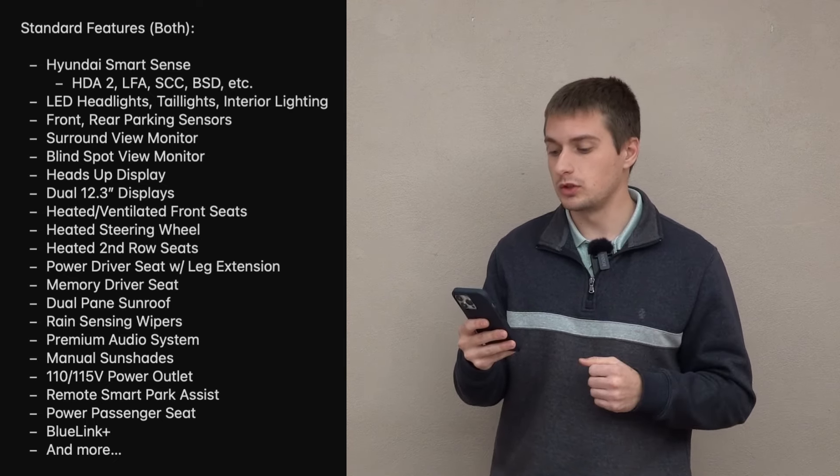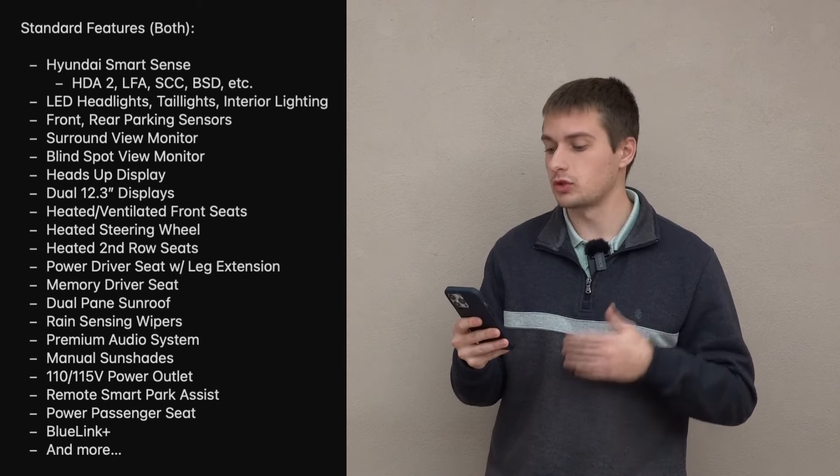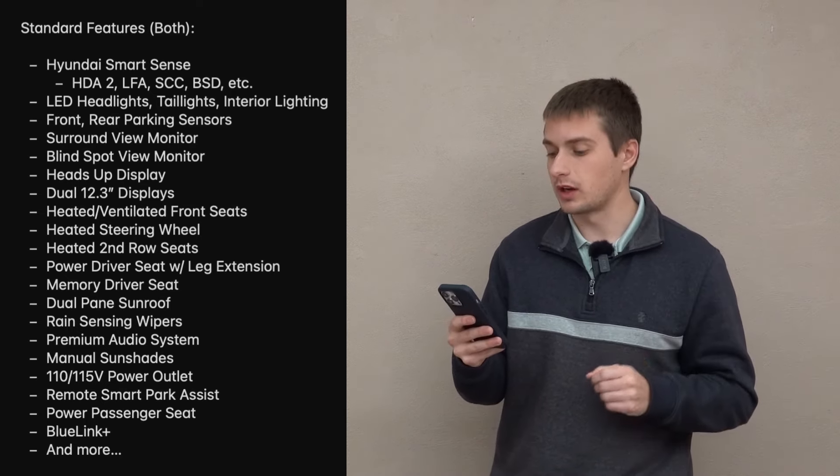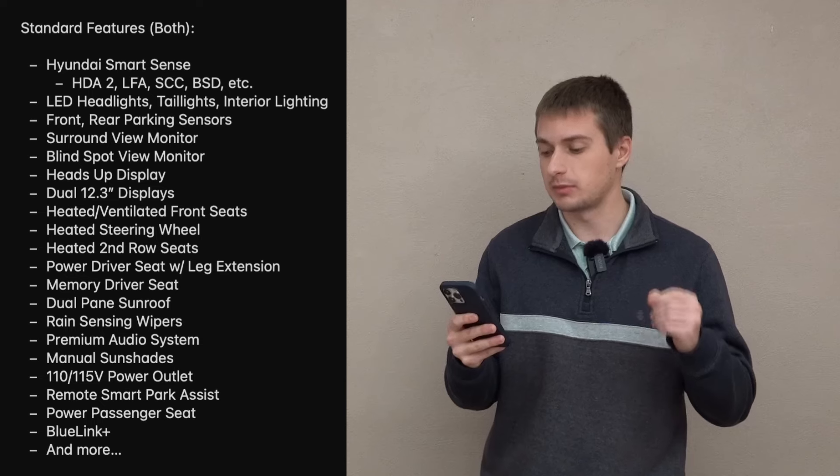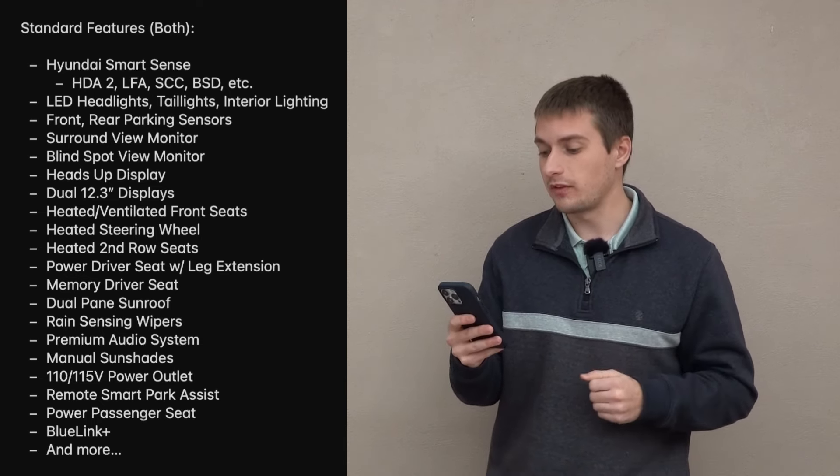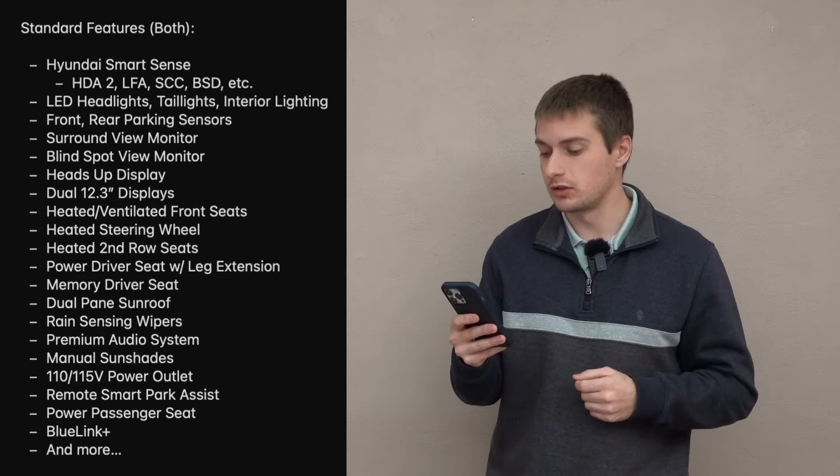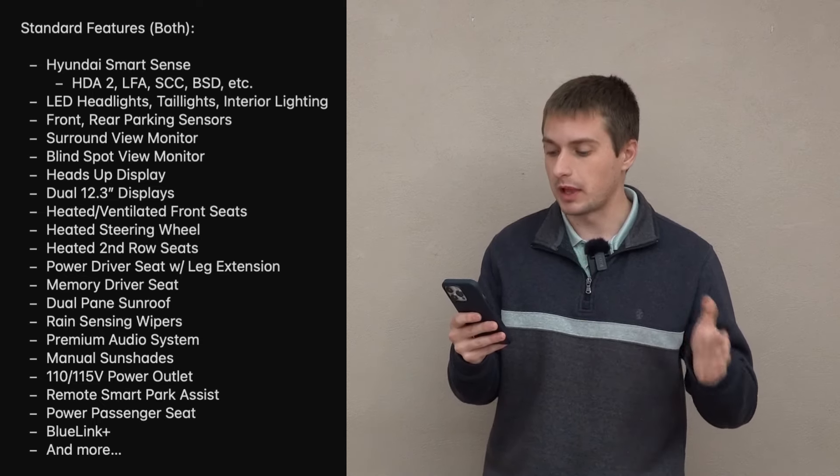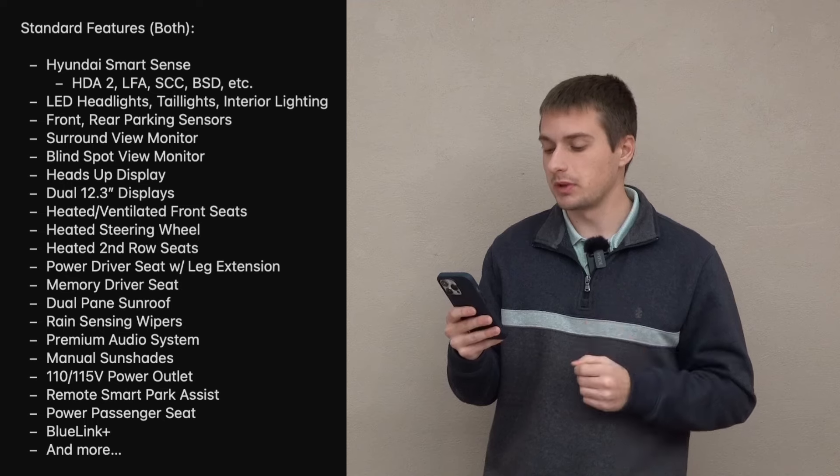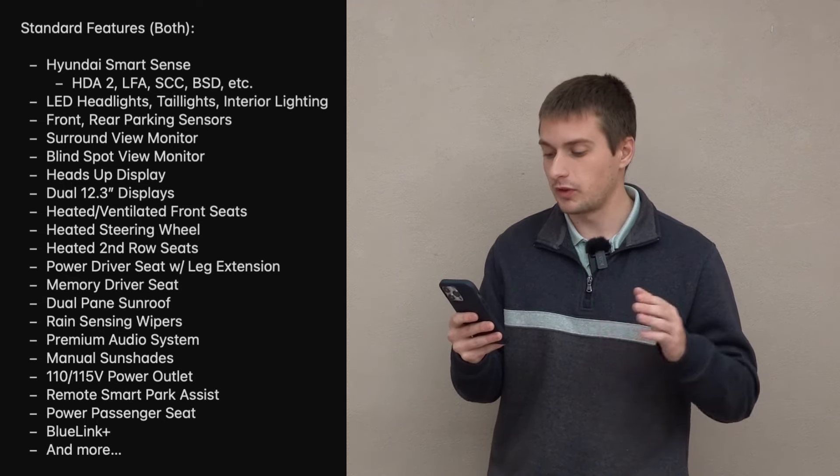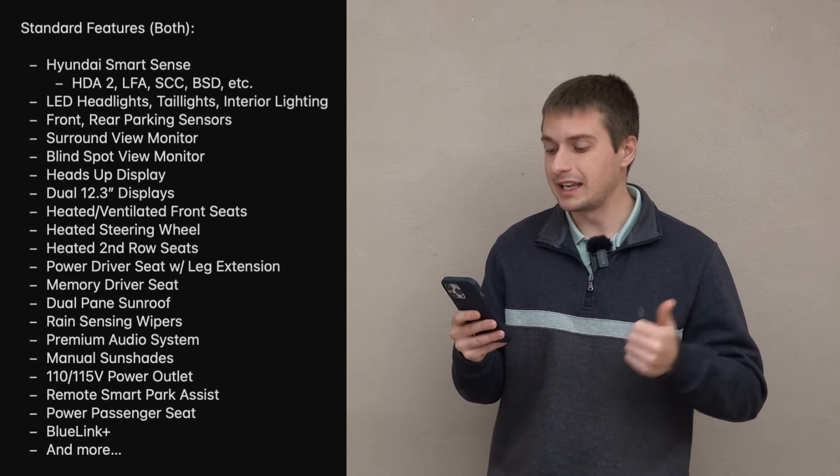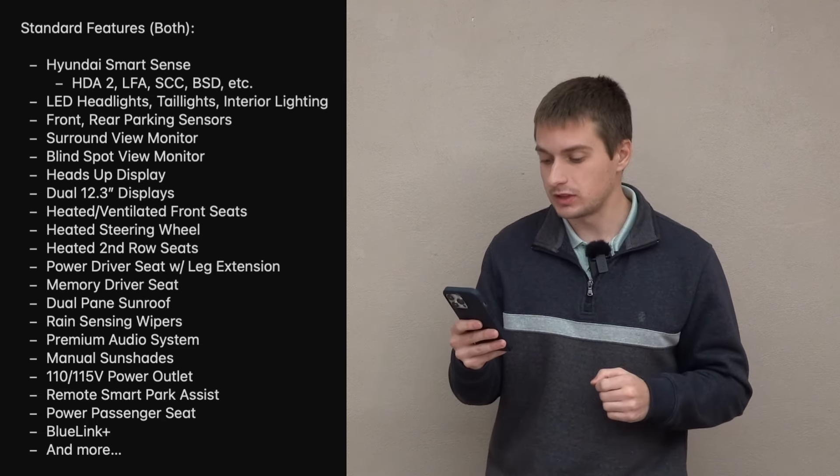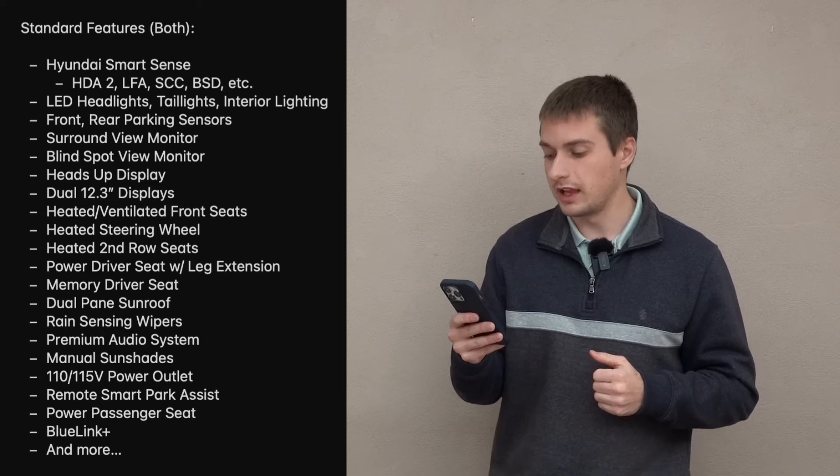So first up, I want to start with the standard features that you're going to find on each of these two models, both the Santa Fe Calligraphy and the Palisade Calligraphy, then move into the features that you're getting on only the Palisade over the Santa Fe and vice versa, the Santa Fe over that of the Palisade. Then wrap up this video with pricing and give you my overall final thoughts. So first up, both these vehicles are going to come with Hyundai SmartSense safety technologies, including highway drive assist, lane follow assist, smart cruise control, blind spot detection with blind spot view monitor, and et cetera. The list goes on. It's a very impressive list of Hyundai SmartSense technologies.